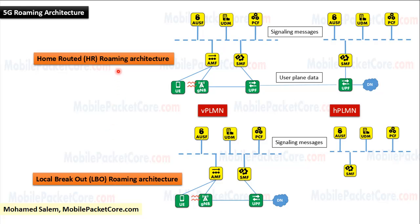In Home Routed roaming architecture, the UE and the visited network connects to the gNB in the visited PLMN, then to the UPF in the visited PLMN, then to the UPF in the home PLMN, and finally to the data network in the home PLMN.